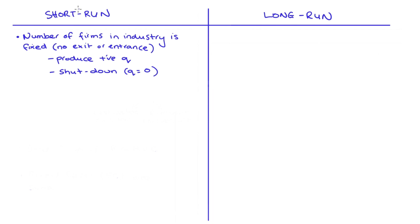In the short run the number of firms in the industry is fixed, which means that there's no exit or entrance by any individual firms. A firm that's in the industry can either produce some positive quantity or they can shut down, which means they produce no units and basically just walk away from trading.